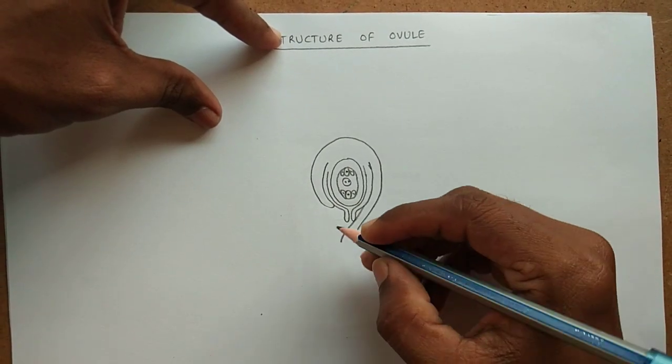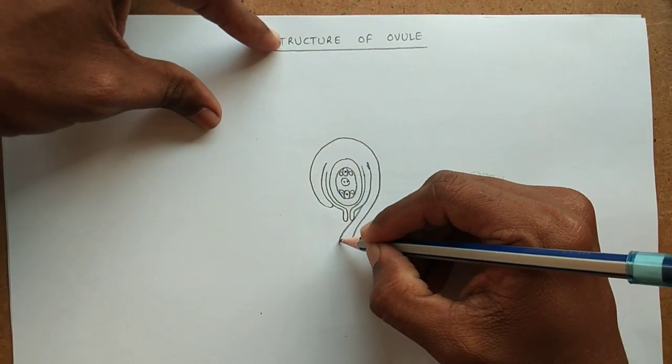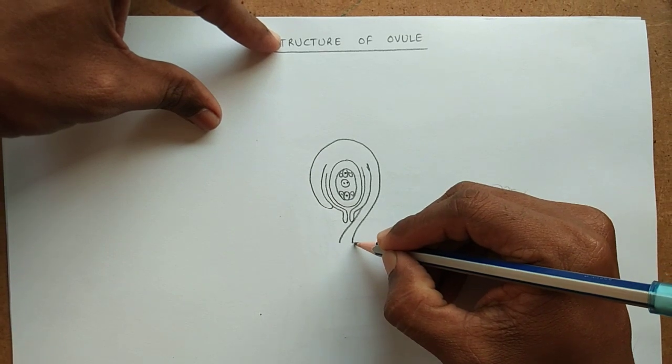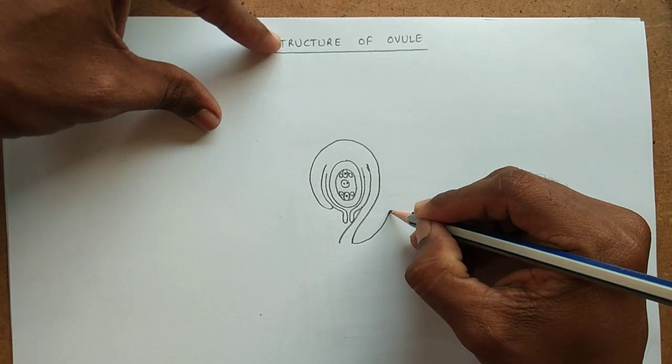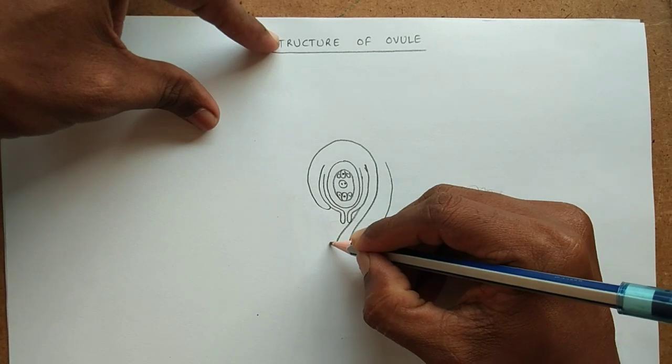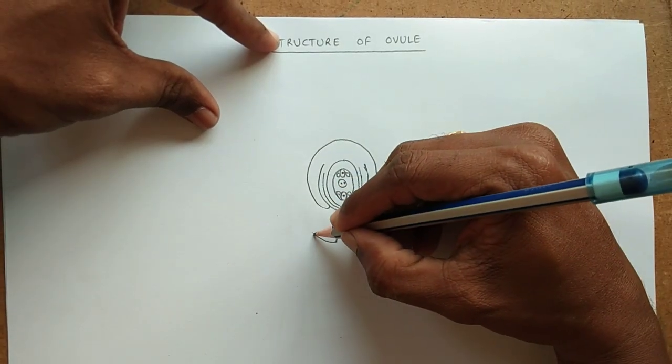After this, we have to draw the ovary. This ovary pot-like structure, like this.